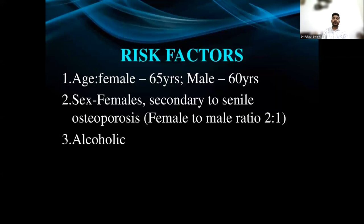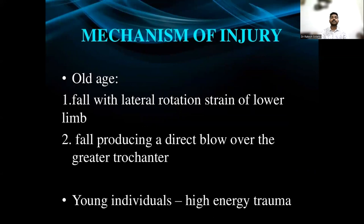Risk factors for fracture neck of femur include female sex — it is more common in females above 65 years of age — and osteoporosis. It is also found more commonly in alcoholic people. Regarding the mechanism of injury: in old age, a fall with lateral rotation strain of the lower limb or a direct blow over the trochanteric area is the cause. In young individuals, it is associated with high energy trauma.